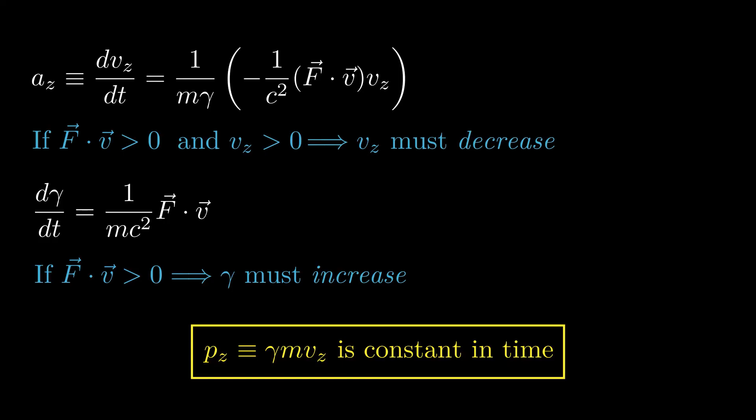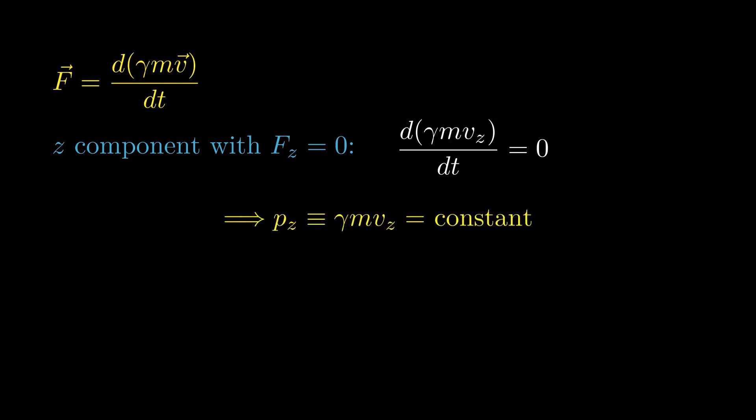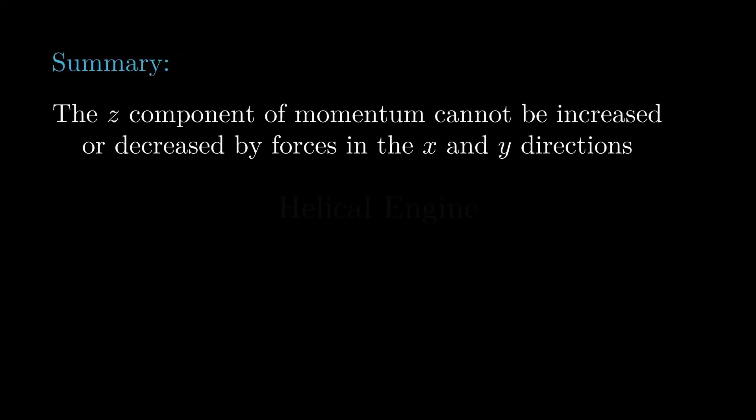This result, that the Z component of momentum is constant, is precisely what Newton's second law is telling us. Taking the Z component and setting F sub Z equal to zero, we find that the time derivative of gamma times M times V sub Z vanishes. So when there is no Z component of force, the gamma factor and the Z component of velocity must each change in such a way that the Z component of momentum remains constant. To summarize, the Z component of an ion's momentum cannot be increased or decreased by exerting forces in the X and Y directions. The analysis of the helical engine given in the NASA technical report is incorrect.